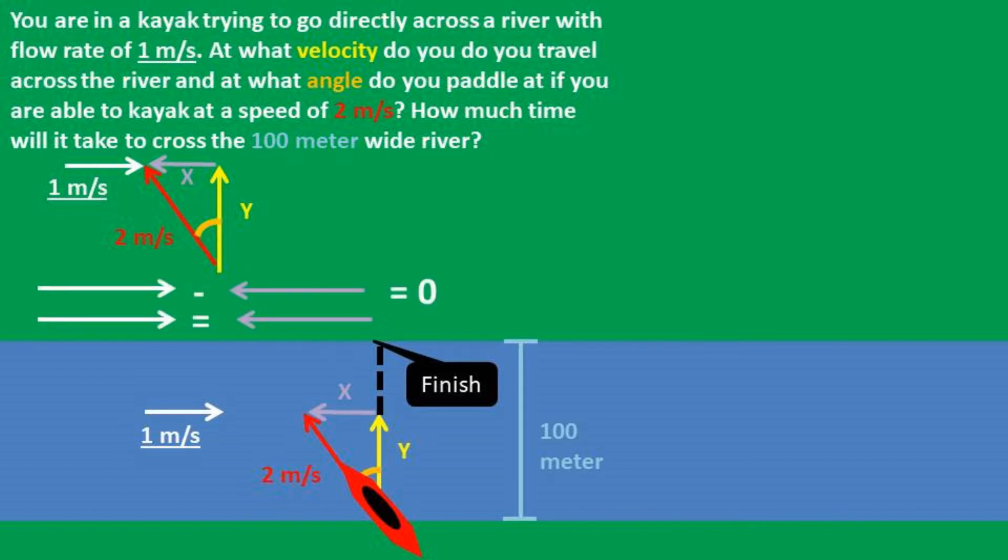Now, if we want to travel at zero velocity up the river, we must have the x vector cancel at the river flow rate. This means that the river flow rate minus the kayak x vector equals zero.